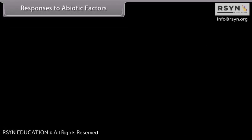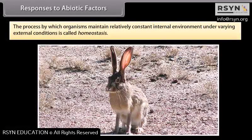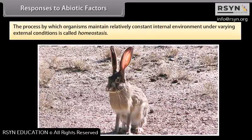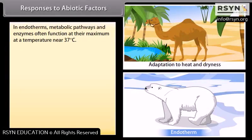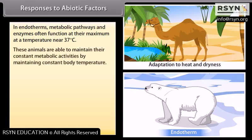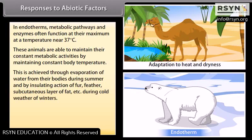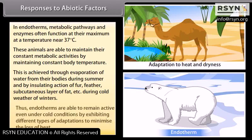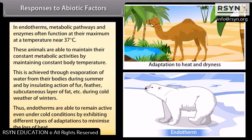The process by which organisms maintain a relatively constant internal environment under varying external conditions is called homeostasis. In endotherms, metabolic pathways and enzymes often function at their maximum at a temperature near 37°C. These animals maintain constant metabolic activities by maintaining constant body temperature, achieved through evaporation of water during summer and through the insulating action of fur, feathers, and subcutaneous layer of fat during cold winters. Endotherms remain active even under cold conditions by exhibiting adaptations to minimize heat loss.